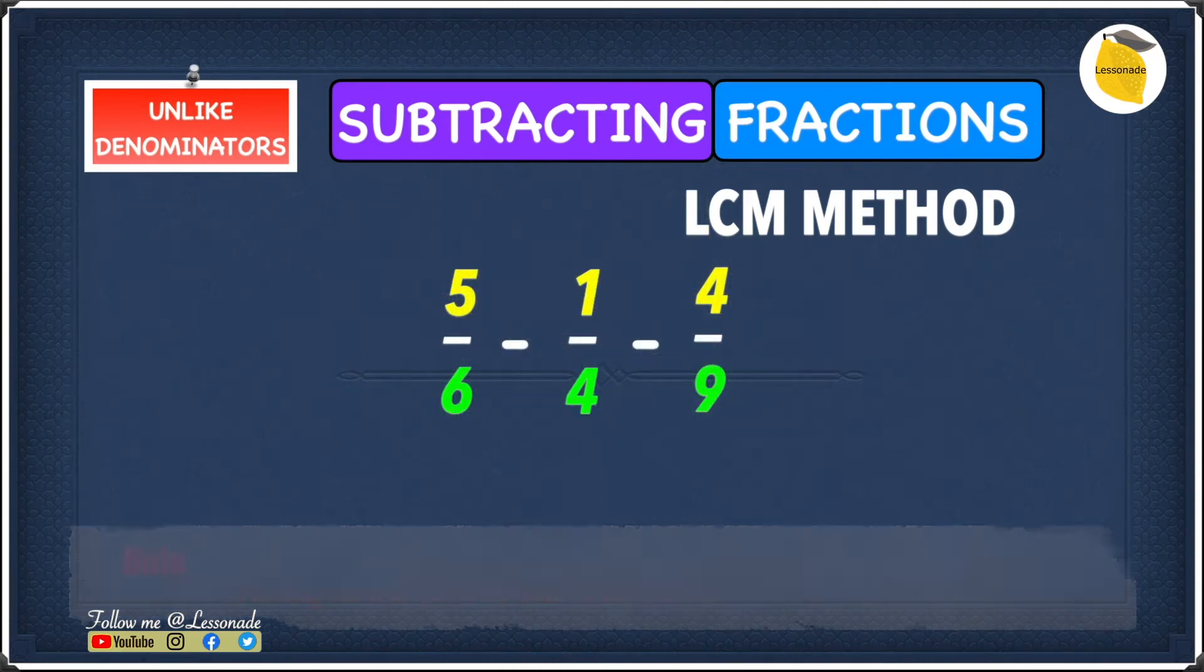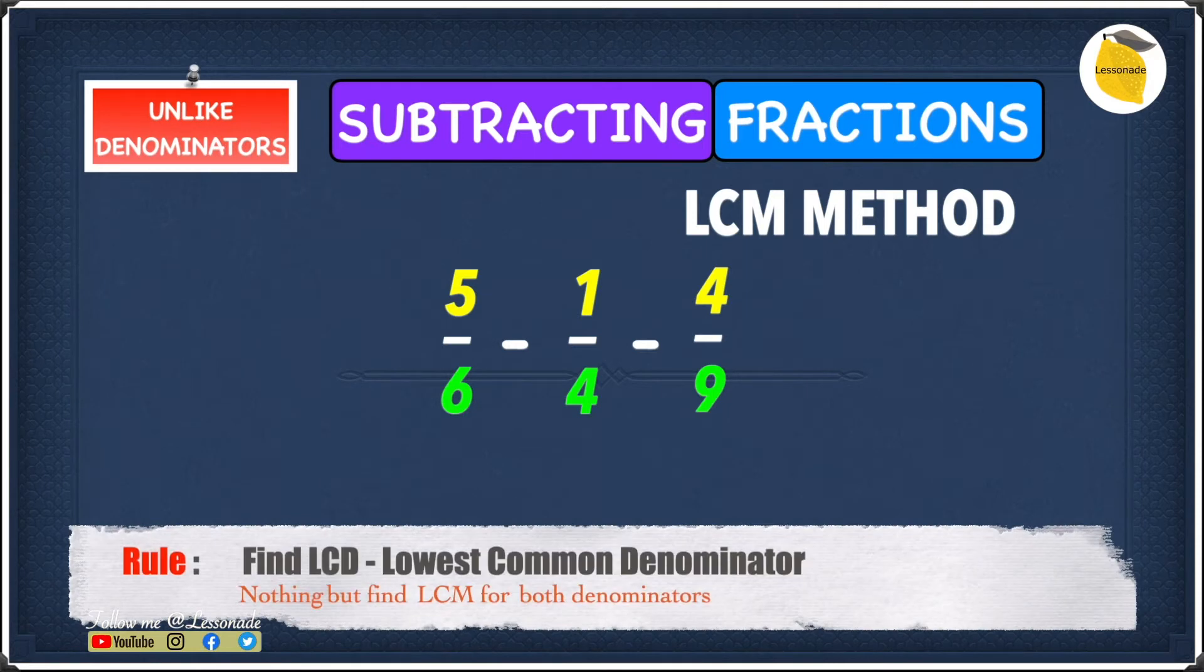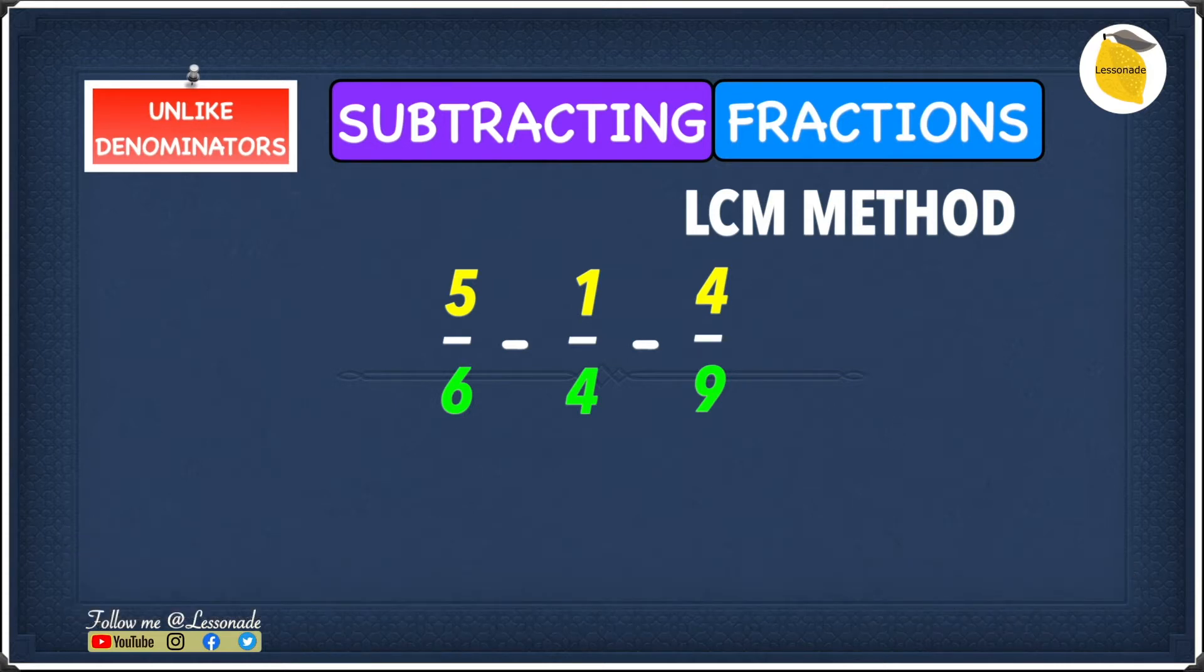So let's start by finding the LCM for the denominators. The denominators are 6, 4, and 9. We need to find the LCM for 6, 4, and 9, and the LCM for all three of these numbers is 36.